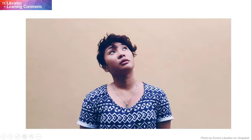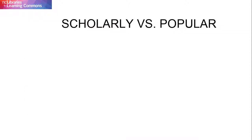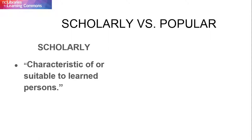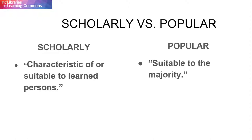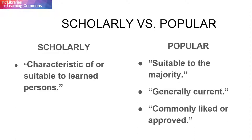But what are popular and scholarly periodicals, and how are they different from one another? According to Encyclopedia Britannica, the adjective scholarly refers to something that is characteristic of or suitable to learned persons, whereas the adjective popular refers to something that is suitable to the majority, generally current, and commonly liked or approved.